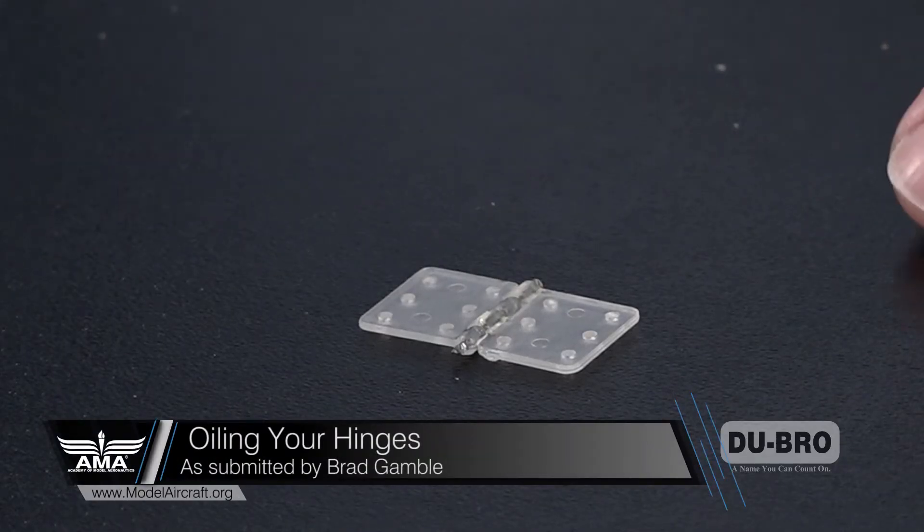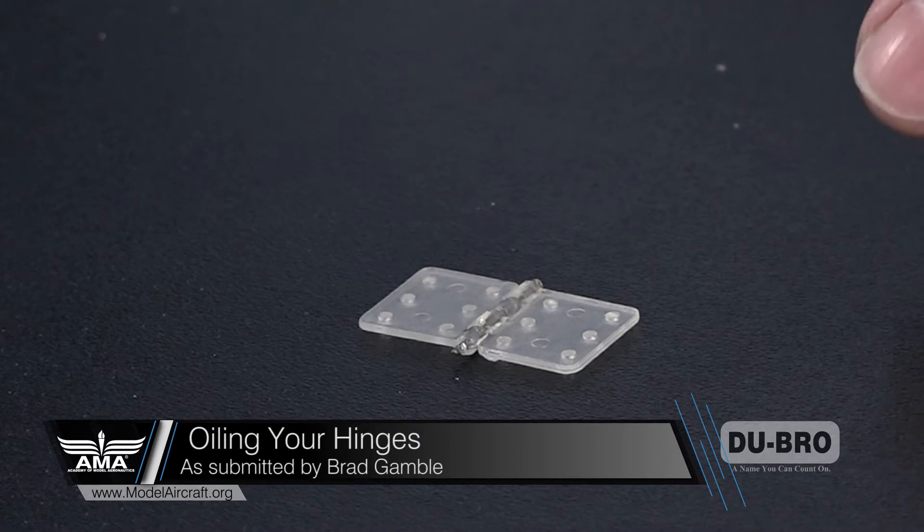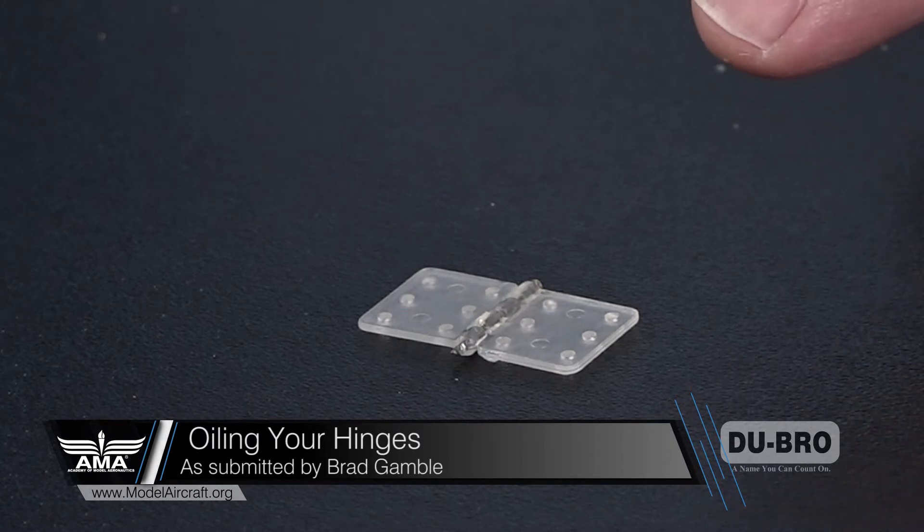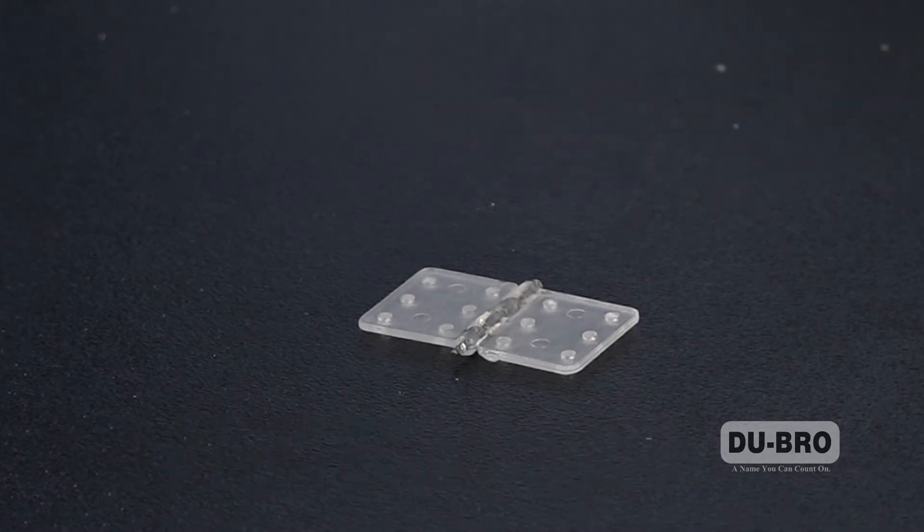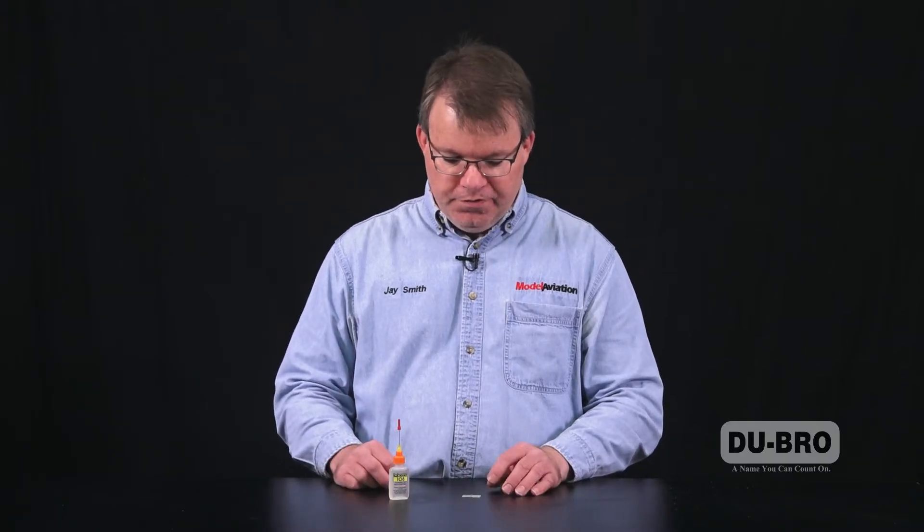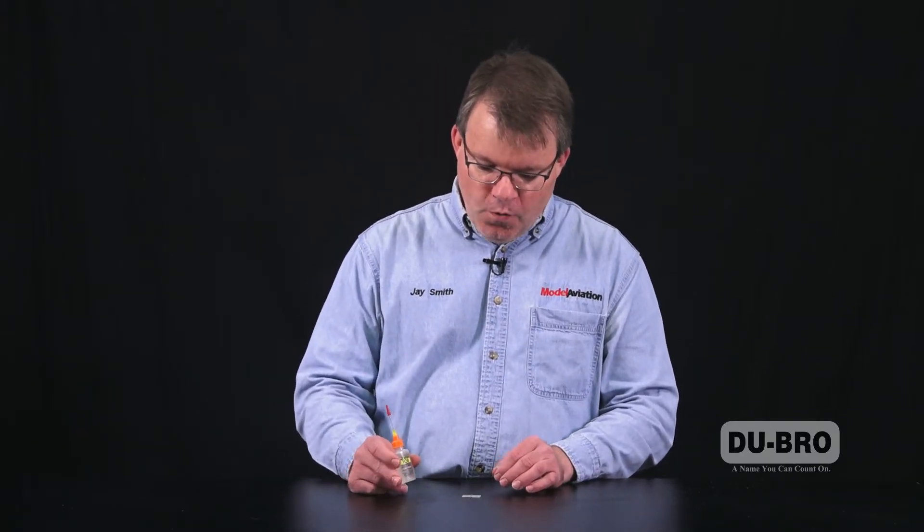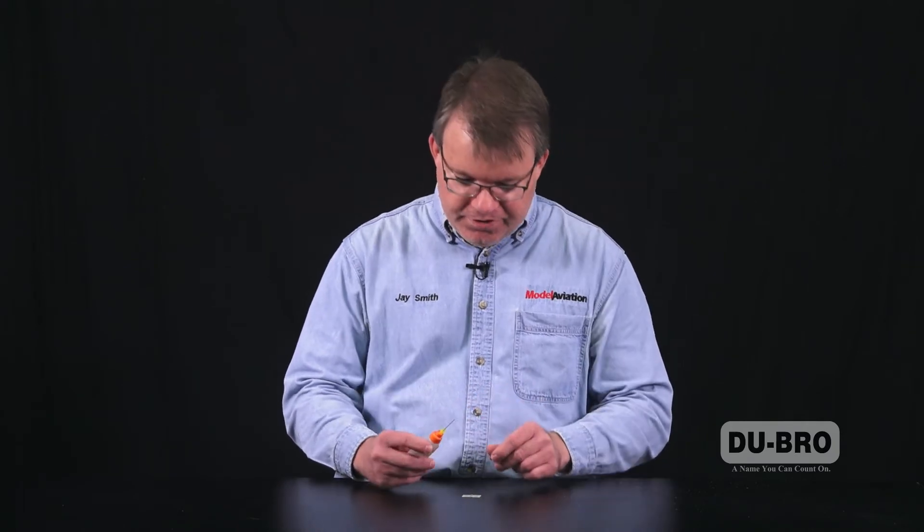Today's tip is about pin-type hinges. When you glue in a pin-type hinge, you want to make sure that no glue gets into the actual hinge itself, or it's not going to allow your elevator, rudder, aileron, or whatever control surface you're using to move. You can use lightweight oil—just put a tiny bit right on the hinge